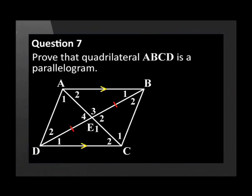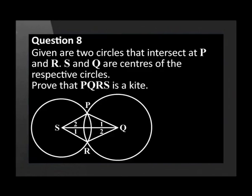Prove that quadrilateral ABCD is a parallelogram. Given two circles that intersect at P and R, where S and Q are centres of the respective circles, prove that PQRS is a kite.